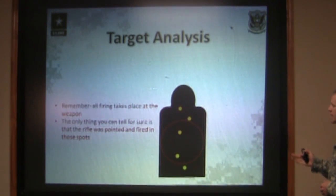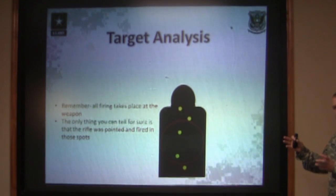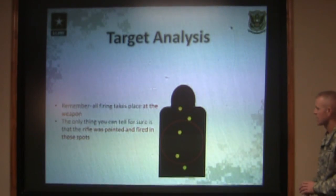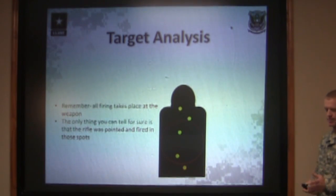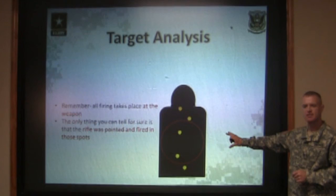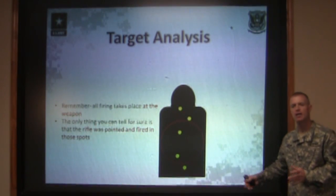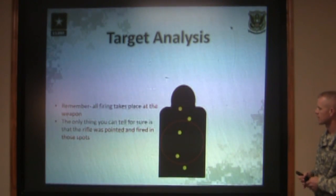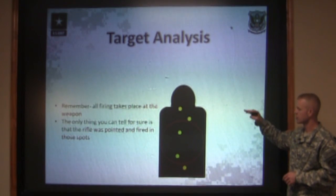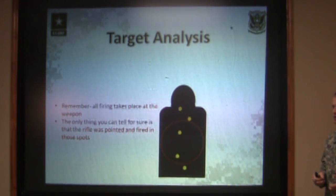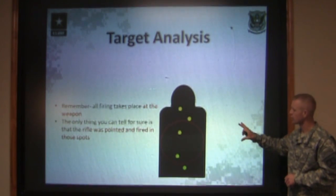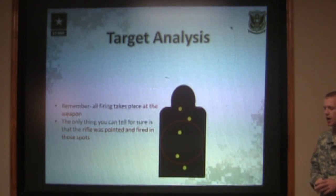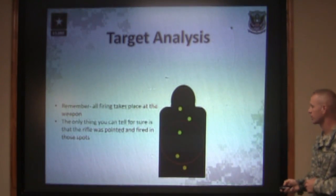Now let's talk about target analysis. The important part of analyzing a target downrange is to remember that all shooting takes place at the rifle. Nothing from the muzzle to the target at 25 meters is going to affect where that bullet is on the target — it would take about 50 mile-an-hour wind to move the bullet even a centimeter at 25 meters. Whatever caused that shooter to shoot higher, lower, or bigger groups happened at the rifle. You can't really tell what the shooter was doing wrong by looking at the target; you need to watch the shooter to ensure they're doing everything correctly, and have them call their shots so you know they're focusing on the front sight post.